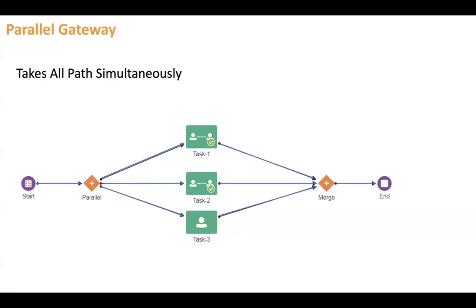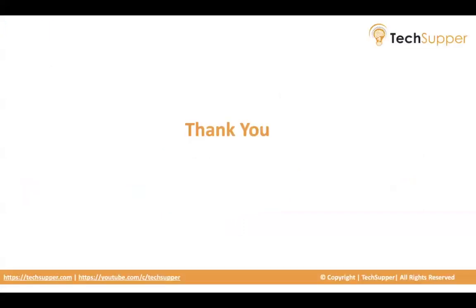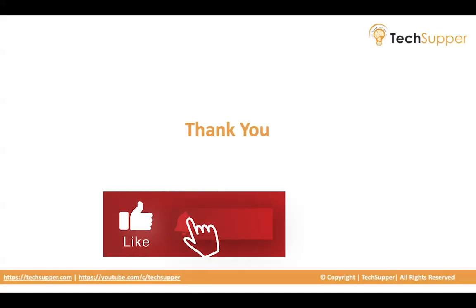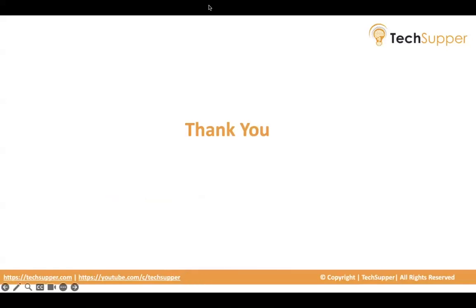In conclusion, we covered human tasks — including approval tasks and submit tasks — and three types of gateways: exclusive, inclusive, and parallel. Thank you, bye.